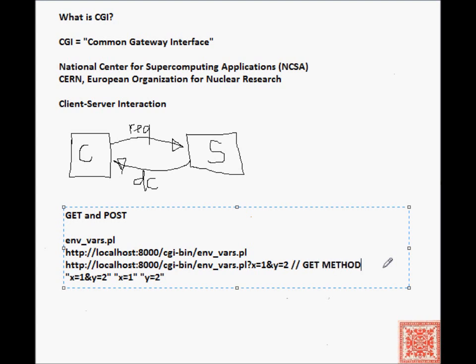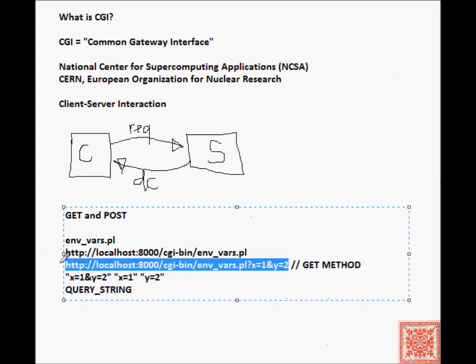And if we do that, if we say to the server that we are using the GET method, the value of the input is stored in the CGI environment variable query string. So when we submit this URL to the server, the input of the query string will be set to x=1&y=2. That's our input.